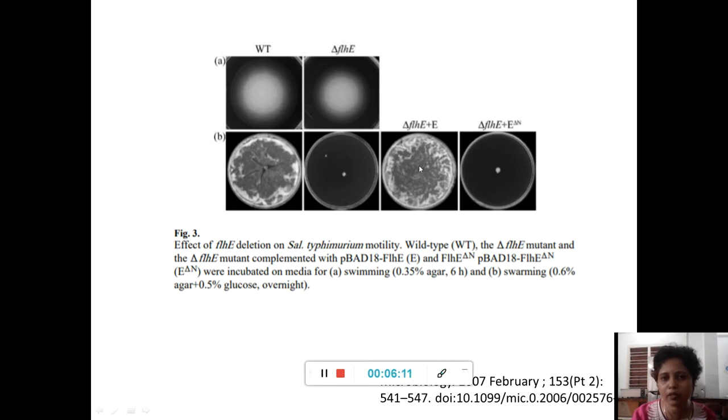Coming to this plate, this is also a mutant but they have supplemented it with something which is helping it to overcome the loss of the swarming motility. Here also, this is deficient. FLHE is deficient. So what happens? The swarming motility is not present. So the change in motility of the organism can also be used as a mutation detection tool. These are all coming under phenotypic characteristics.